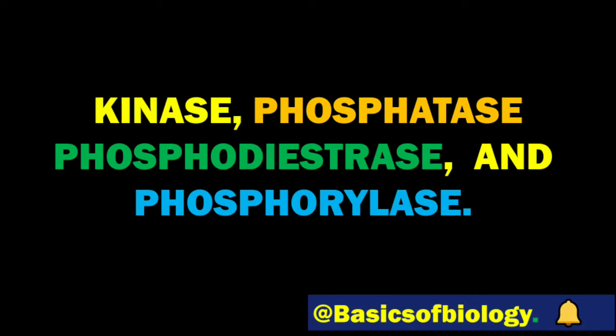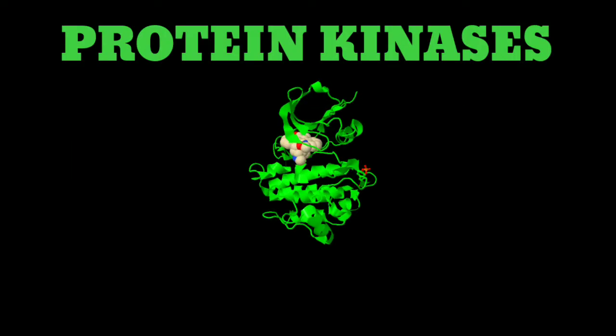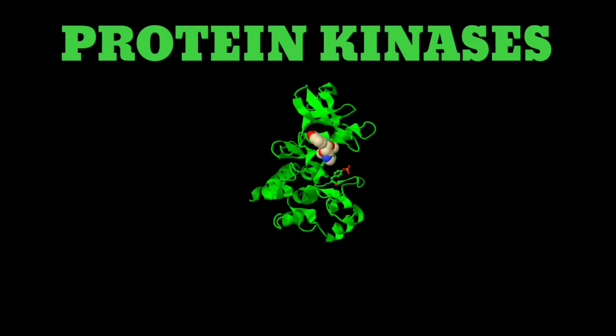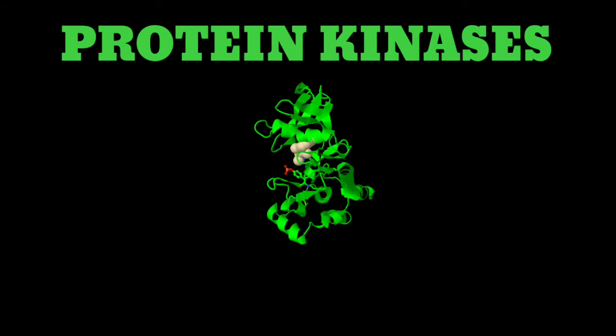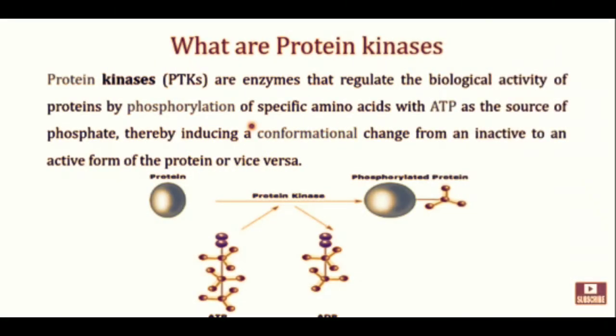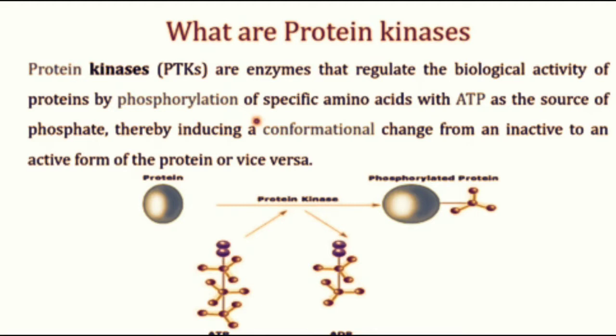In this video series we will discuss about protein kinases, phosphatases, phosphodiesterases, and phosphorylases. Coming to the first — protein kinases. This is the three-dimensional structure of protein kinase. Protein kinases are enzymes that regulate the biological activity of proteins by phosphorylation of specific amino acids, with ATP as a source of phosphate, thereby inducing